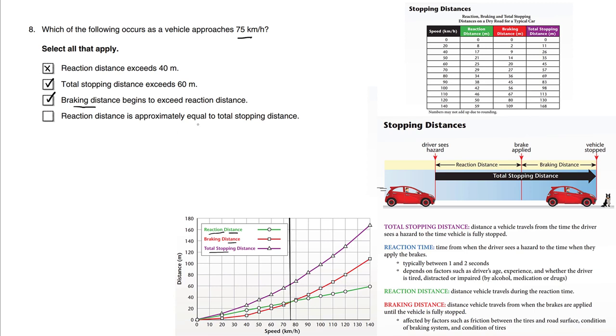Finally, D: the reaction distance is approximately equal to the total stopping distance. The reaction distance is the green graph, and the total stopping distance is purple. Is the green graph really equal to the purple graph? The purple graph is way up here, and the green graph is way down here. Let's not confuse which graph we're talking about - this is false.